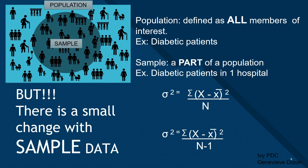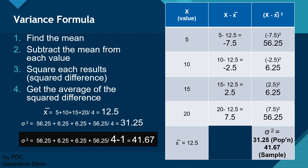Given this new information, let's adjust our variance considering that our values are only sample data. Everything remains the same except we change the denominator to a lower value to adjust for the smaller population. So instead of using 4 as the denominator, we subtract 1, and with 4 minus 1, we now have 41.67 as our new sample variance.